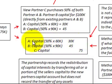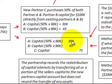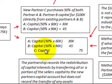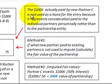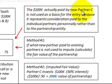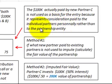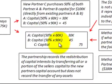For Method One, Partner A's capital balance would be reduced — debited — by 50% of $60,000, or $30,000. Partner B's capital amount would be reduced by 50% of $90,000, or $45,000. And Partner C's capital account would be credited or increased by $75,000. A note here: the $100,000 paid by new Partner C is not used as a basis for the entry because it represents consideration paid to the individual partners personally rather than to the partnership entity.